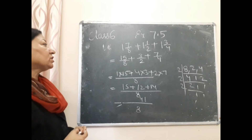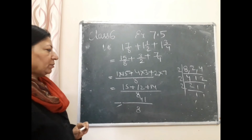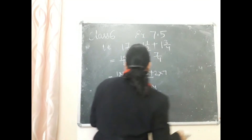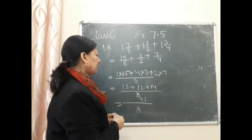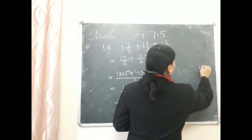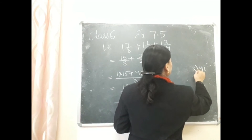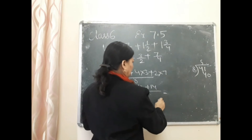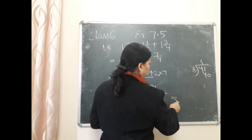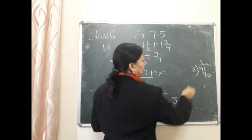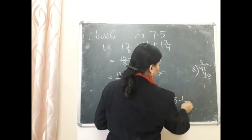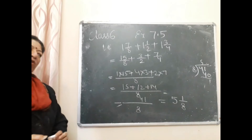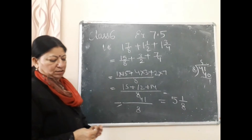और चाहें तो हम इसको mixed fraction में convert कर सकते हैं, क्योंकि सारे question mixed fraction में थे। 41 को 8 से divide करेंगे: 8×5 = 40, remainder 1. तो answer = 5 1/8.